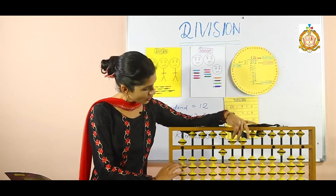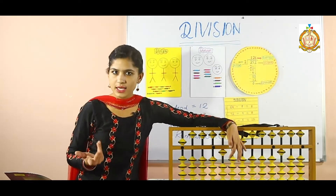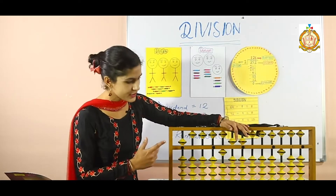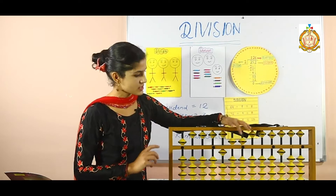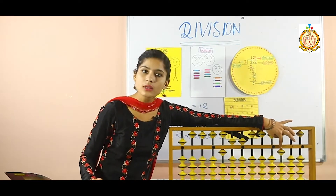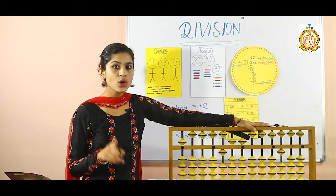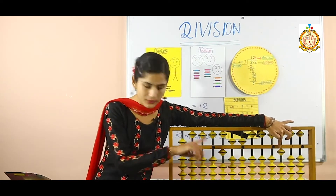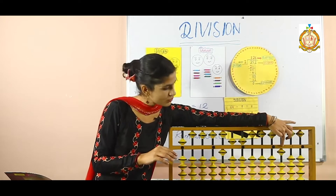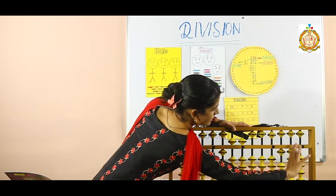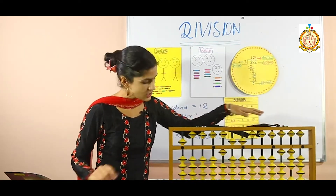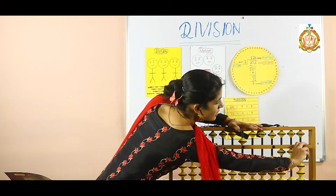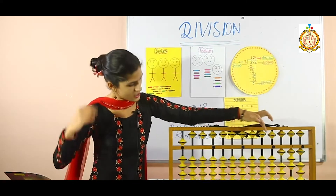Our finger was on the third rod. Since we added 1 there, now add 0 (no bead needed) then move to the next rod and add 3. 3 fives are 15, so deduct 15 from here — only 5 is left. 5 ones are 5. Deduct 5 from here. No remainder. Our answer is 1, 3, 1 — that is 131. That is already written on the flashcard: dividing 655 by 5 gives 131, which the abacus is also showing.